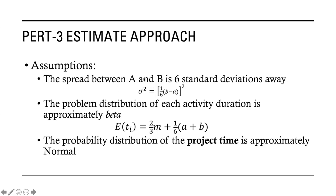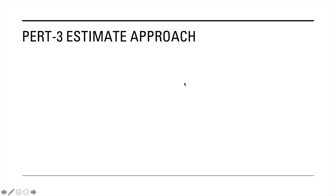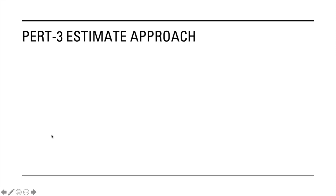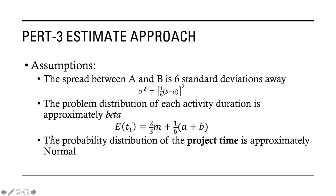This means that given that each activity will have an A, B, and M value, the variance of A, B, and M will be computed this way.